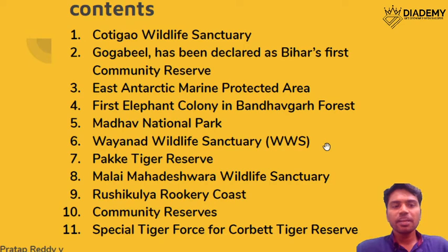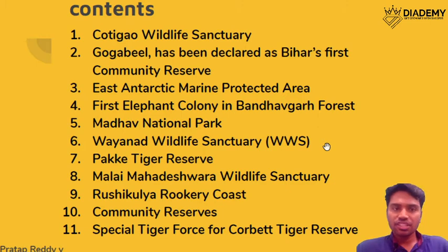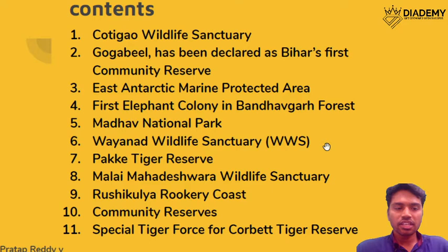We will also look at the East Antarctic Marine Protected Area and a particular commission related to this Antarctic region. Then in Bandhavgarh forest, there is the first elephant colony. We will also look at Madhav National Park, why the Wayanad Wildlife Sanctuary is not a tiger reserve, Pakke Tiger Reserve, Male Mahadeshwara Wildlife Sanctuary, Rushikulya Rookery Coast — rookery means it's a breeding site — and finally community reserves and the special tiger force for Jim Corbett Tiger Reserve.